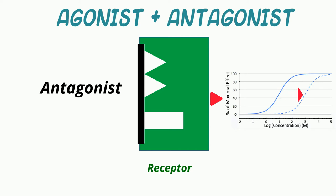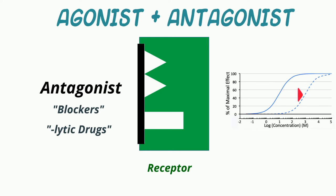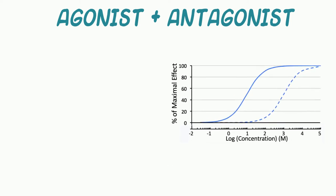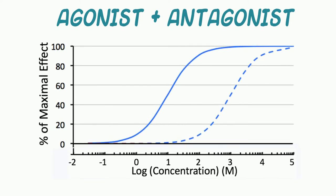Other terms we use for antagonists are therefore blockers or lytic drugs. For example, a beta-1 receptor antagonist is a beta-1 receptor blocker and is sometimes called a sympatholytic drug. Let's now take a look at the impact of a competitive antagonist on the effect of an agonist using the sigmoidal log dose response relationship we've discussed before.